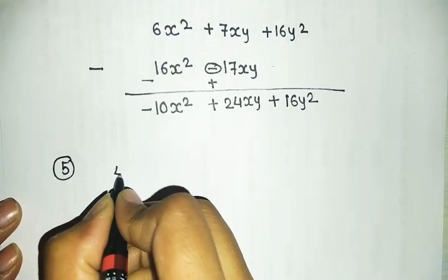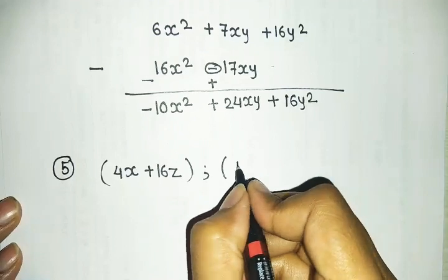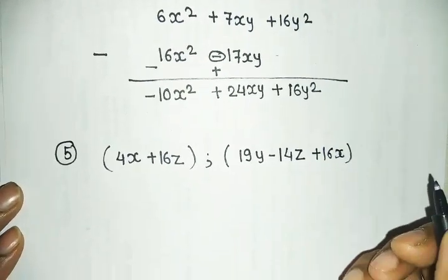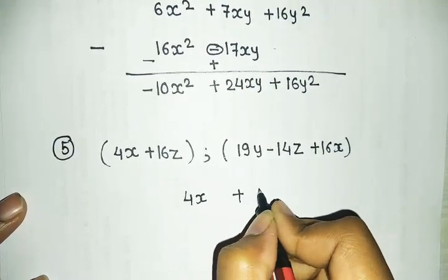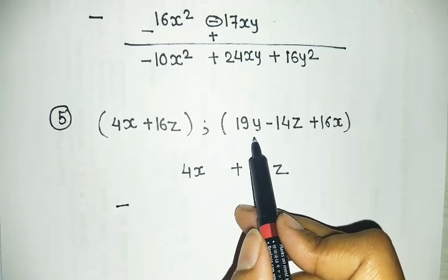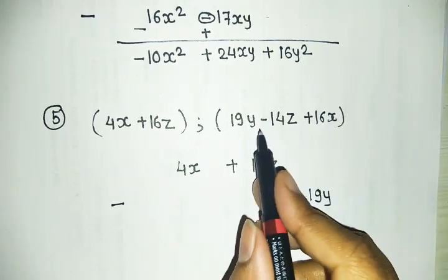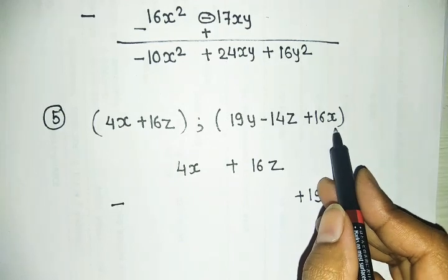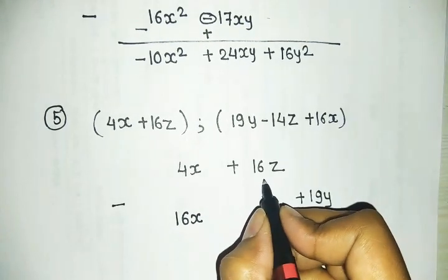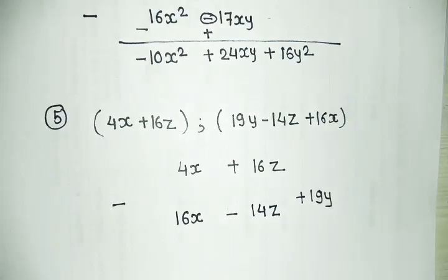Example number 5: the first expression is 4x plus 16z. The second expression is 19y minus 40z plus 16x. We arrange like terms: the x terms are 4x and 16x, the z terms are 16z and minus 40z, and the y term is 19y with 0 in the first expression. Rearranging: 4x plus 16z minus 14z plus 19y in like-term order.